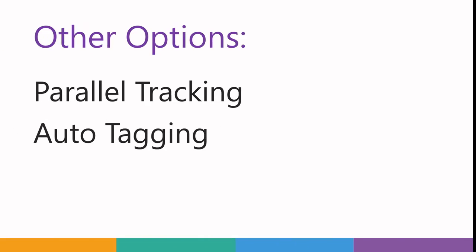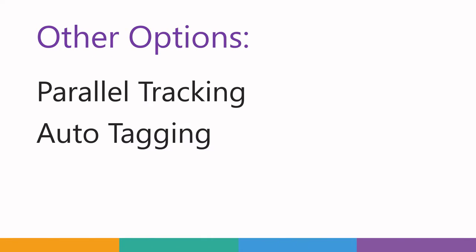There are also other options like parallel tracking and auto tagging. If you don't need to use a tracking template, you can go for parallel tracking and auto tagging, as these do the same thing that tracking template will do for you. But if you're using third-party resources for measuring, then you have to use a tracking template.